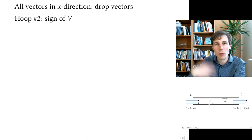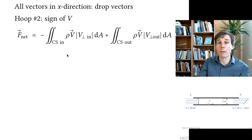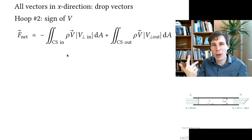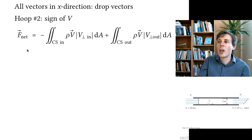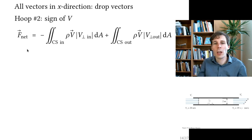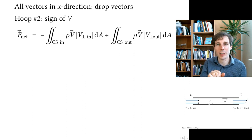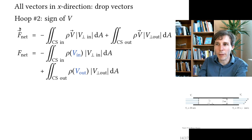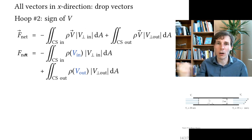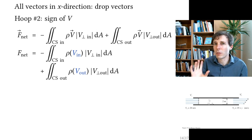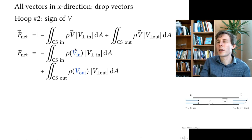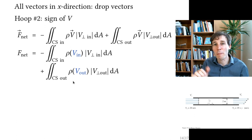Hoop number two is the sign of v when we drop the vectors. The momentum equation is a vector equation with x, y, and z components — it is actually three equations. Since the whole flow is in the horizontal x direction, we can remove the vectors, but some vector components may be positive or negative and we must pay attention.